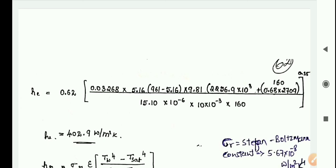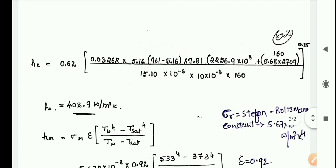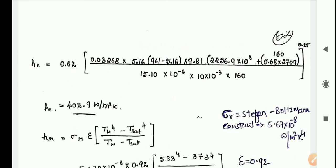...in the bracket, k cube times rho v times (rho L minus rho v) times g, in the bracket hfg plus 0.68 CPv times delta T, divided by mu times D times delta T, whole raised to 0.25. This formula is available on page 143. Substituting all the values, the hc value is 402.9 Watt per meter square Kelvin.